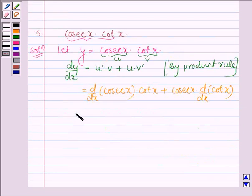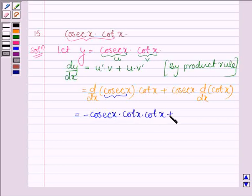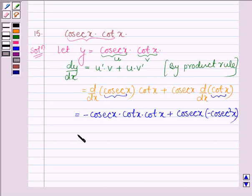This is further equal to derivative of cosec X which is minus cosec X times cot X, then we have cot X, plus cosec X and derivative of cot X is minus cosec square X.